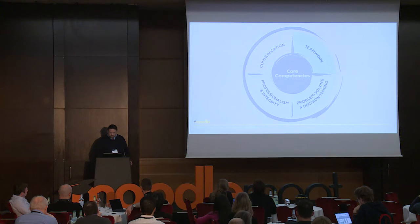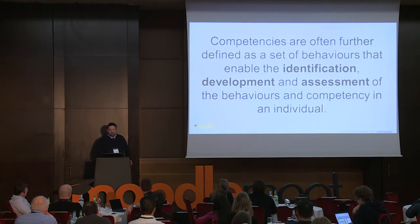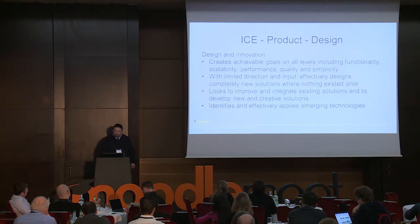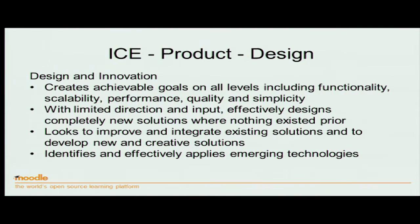Remember the slide at the beginning: identification, development and assessment — those are the key underlying principles about why you would use a competency framework. Looking at the bottom, it says 'identifies and effectively applies emerging technologies.' Clearly if you're doing design and innovation, that's a skill you would have, but how would you measure that? A lot of frameworks go into detail at this point about exactly how they would be measured, what the evidence is, and who will assess it. So it goes beyond just lists — it literally becomes the equivalent of a curriculum or assessment strategy against each behaviour. Some of these competency framework documents can run to hundreds of pages.